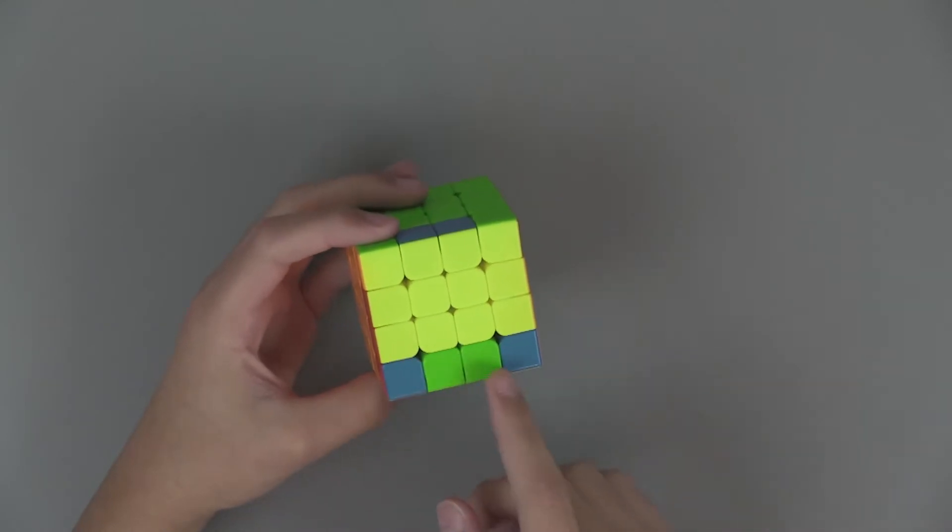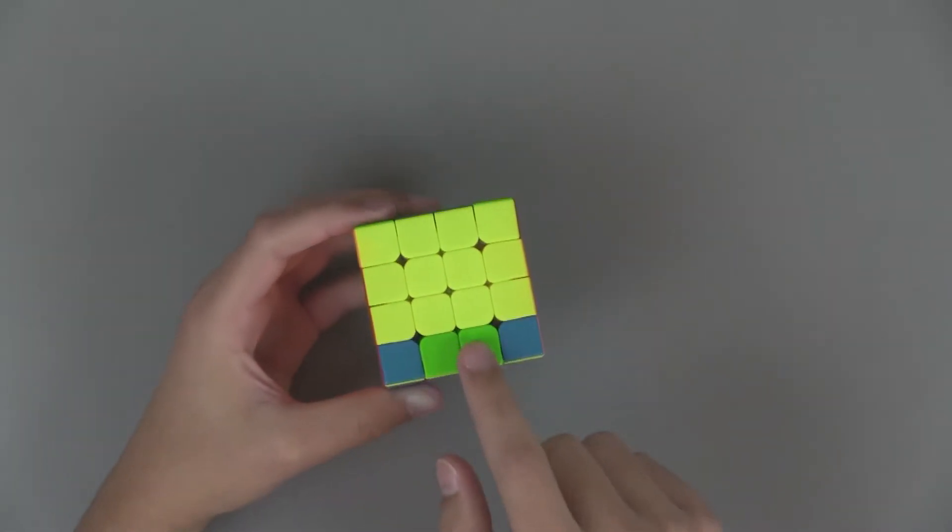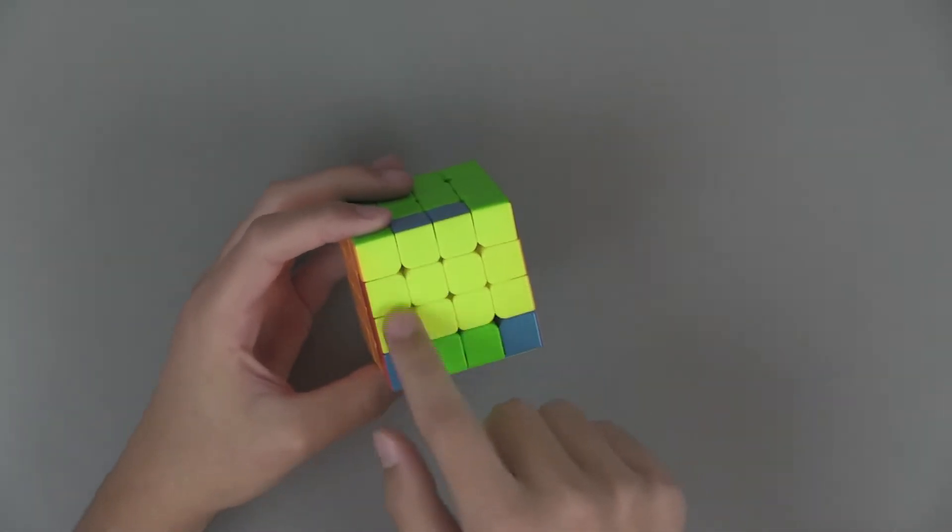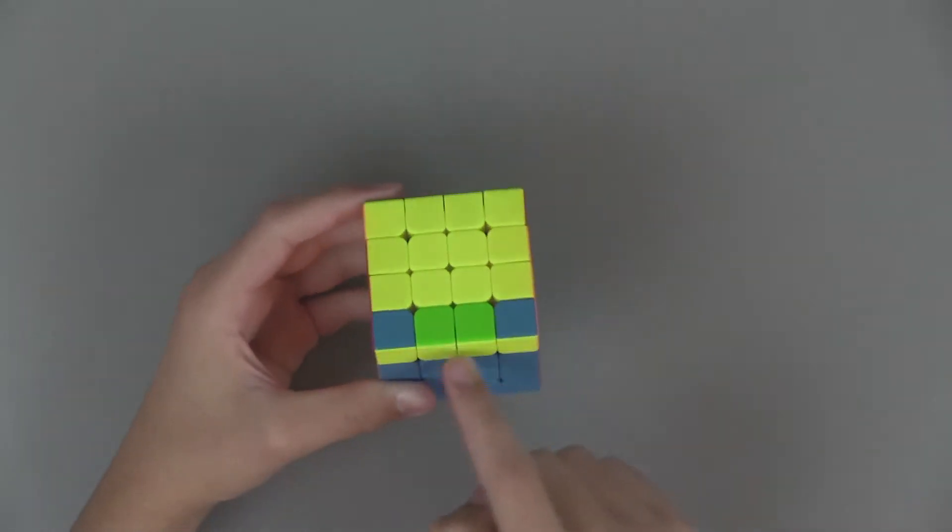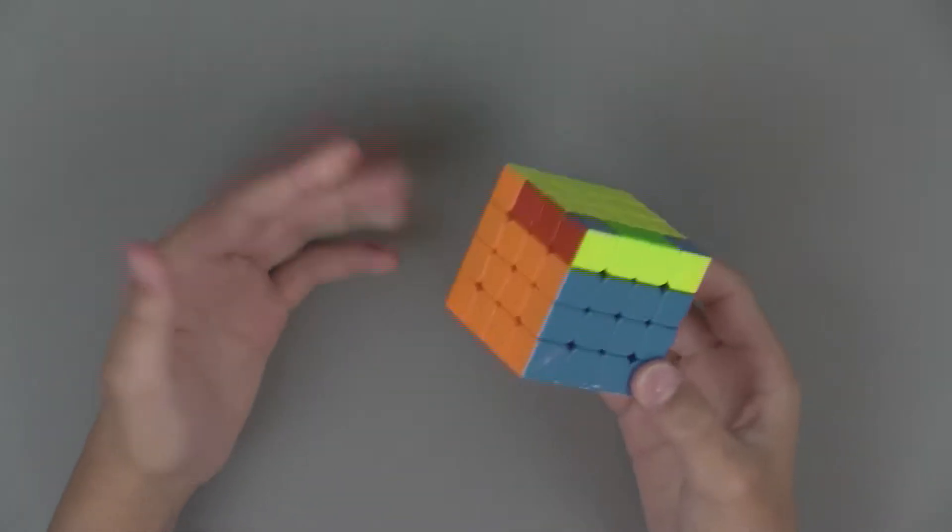The way you recognize it is if only three or one of the edges when you get to OLL are facing up. So here we have three and then we have one facing down, so just an odd number.